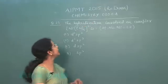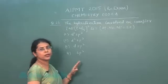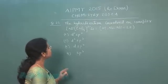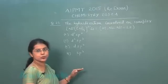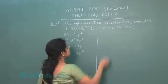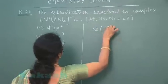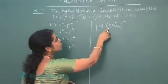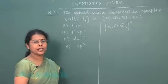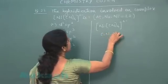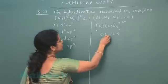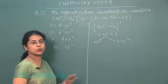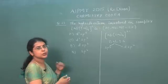Next question, question number 23. The hybridization involved in the complex [Ni(CN)4]2- is, atomic number of nickel is given and four options are given: d2sp2, d2sp3, dsp2, and sp3. Here the complex given is an anion. Now see in this complex only 4 ligands are attached to nickel. It means coordination number of this complex is 4. So there will be only 2 possibilities. Either this complex will be sp3 hybridized or it is dsp2 hybridized. So first two options should be ruled out.